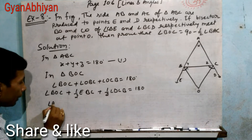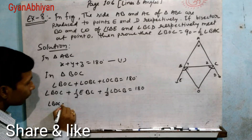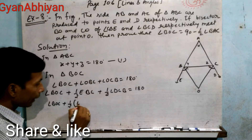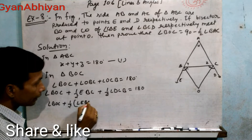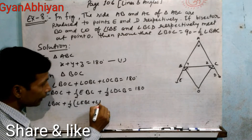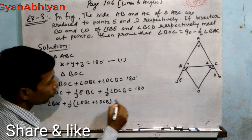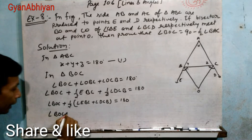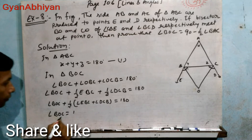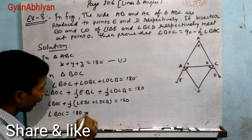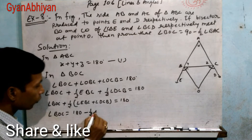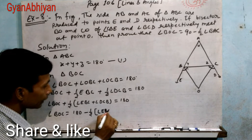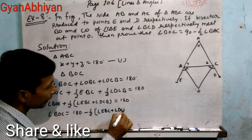इसे rearrange करते हैं: angle BOC equal to 180 minus 1/2 (angle EBC plus angle DCB). ठीक है, यहाँ तक clear है।